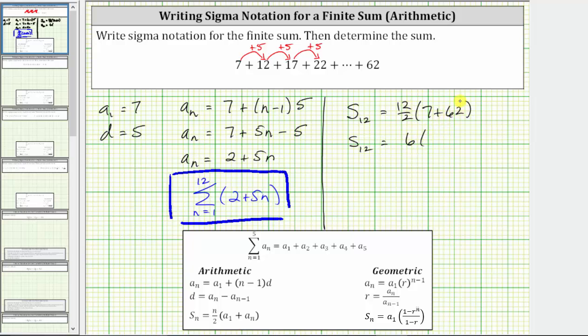And seven plus 62 is 69. Six times 69 is equal to 414, which means the sum of the series, or S sub 12 is equal to 414.